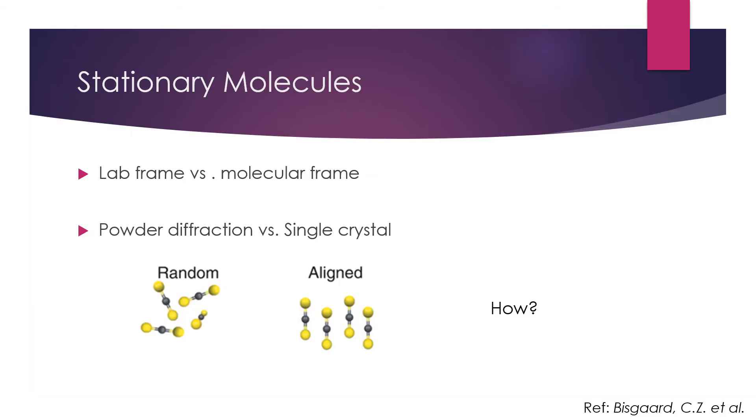In the lab frame, molecules in a gas will be in random, constantly changing alignments. Measuring the angle-resolved data in this case would not tell us any information that we don't already know from the photoelectron spectra, as all the angular dependence is cancelled out by these random orientations.